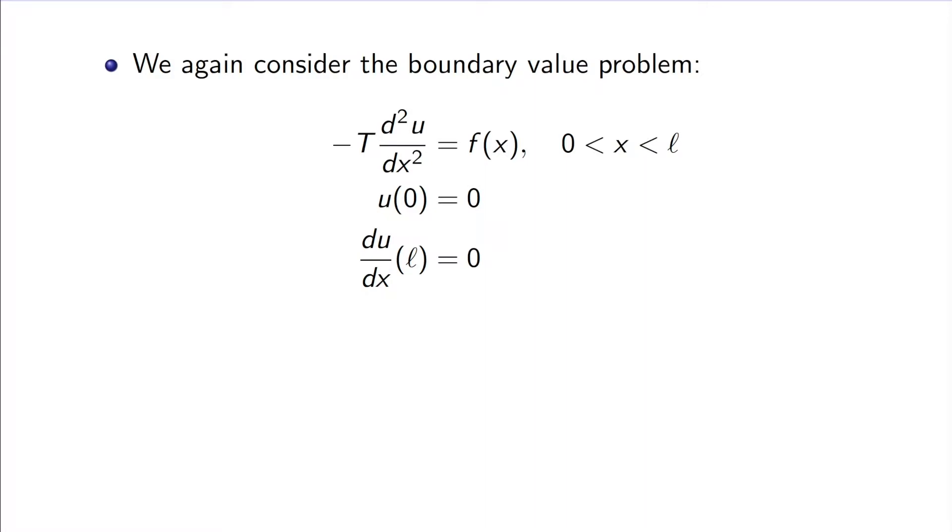We will consider the mixed boundary value problem where one end of the boundary has a Dirichlet condition and the other has a Neumann condition. We can write this as a linear operator equation using the linear operator Lm whose domain is a subspace of functions in C2 that satisfy the given boundary conditions. This domain is what we have been calling C2m.